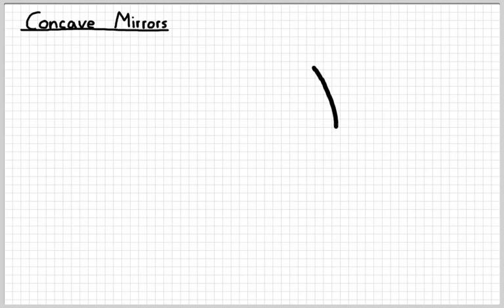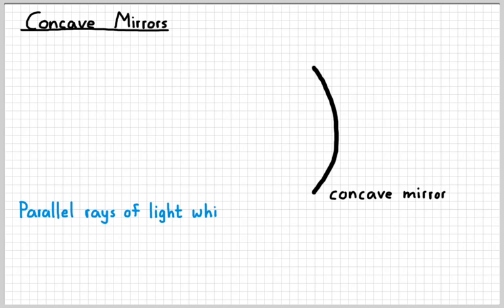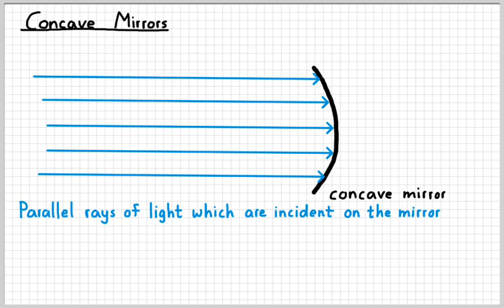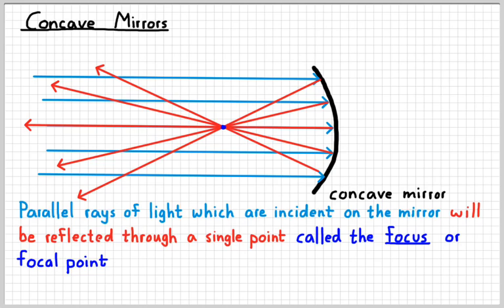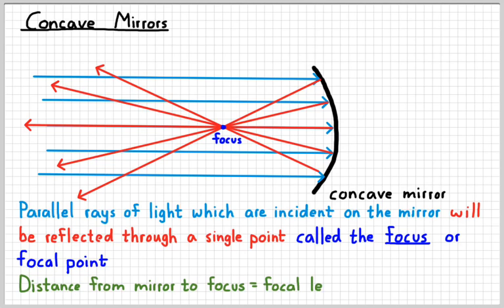Let's first look at concave mirrors. Here's a concave mirror from a cross-section. The basic idea is what happens when parallel rays of light strike the mirror — they reflect towards one point on the left side of the mirror. That point is referred to as the focus, or focal point. The distance from that point to the mirror is the focal length, which is a characteristic of the mirror and depends on how curved the mirror is. Parallel rays of light which strike the mirror will be reflected through the focus.